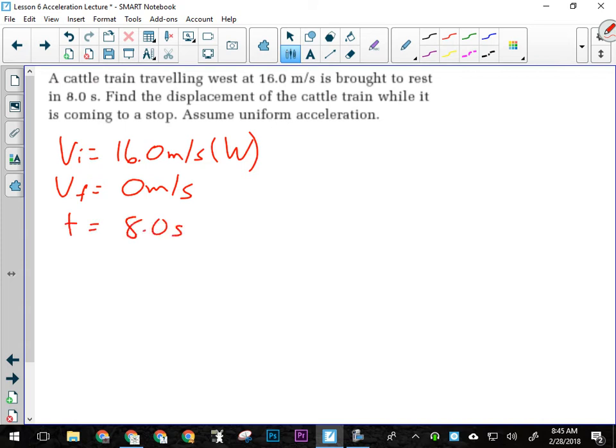Find the displacement of the cattle train while it's coming to a stop. So they want me to find displacement. The object is accelerating, but I was never given acceleration. So what formula could I use that we went over yesterday that has those four things in it?